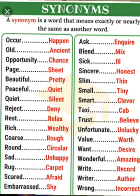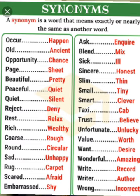Unfortunate — U-N-F-O-R-T-U-N-A-T-E — means unlucky, U-N-L-U-C-K-Y; unlucky means unfortunate. Next is value — V-A-L-U-E — its synonym is worth, W-O-R-T-H; worth means value, or value means worth. Next is want — W-A-N-T — want means desire, D-E-S-I-R-E. The synonym for desire you can write want, or for want you can use desire.